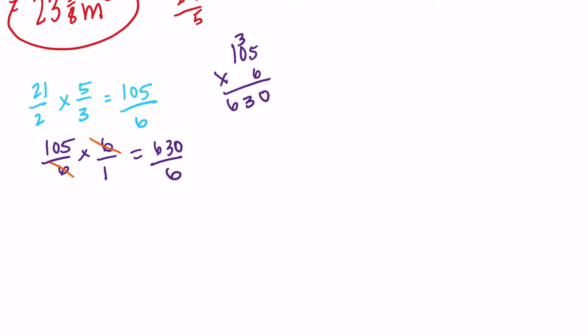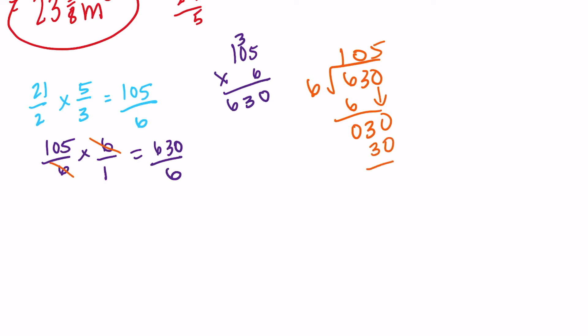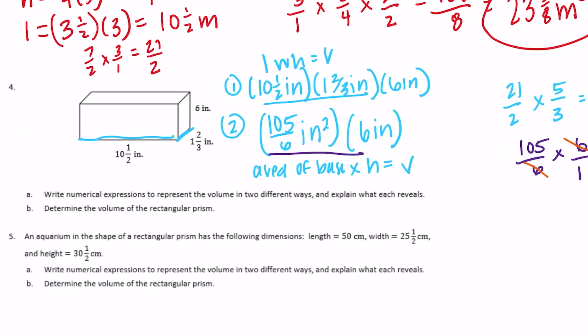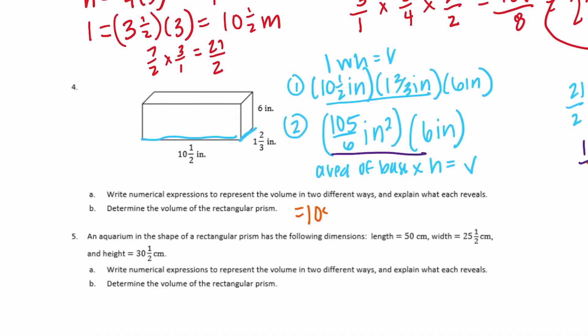Notice the sixes cancel each other out, so we get 105 over one. Six goes into 630 — we get 105 inches cubed.